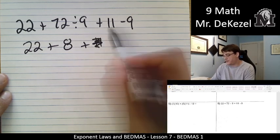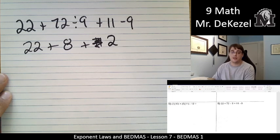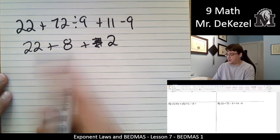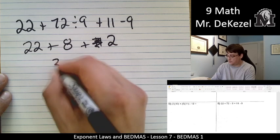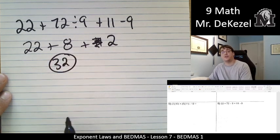Well, that's just 2. 11 minus 9 is 2. I'm going to go ahead and do that. So that means we have 22 plus 8 is 30 plus 2 is 32. Final answer of 32.